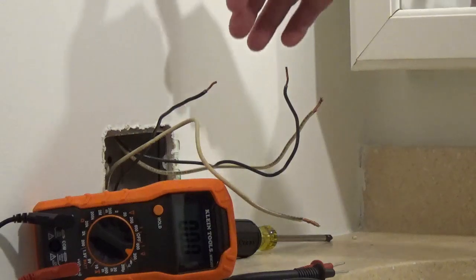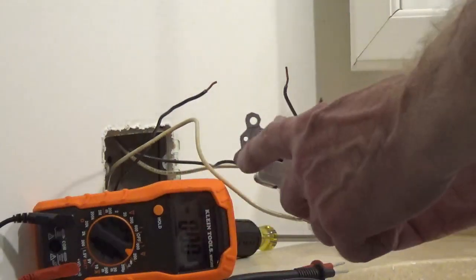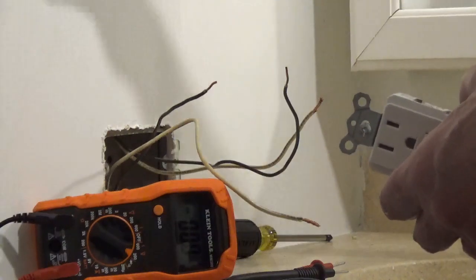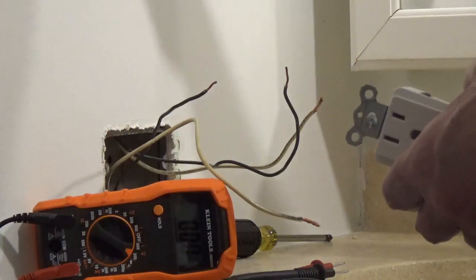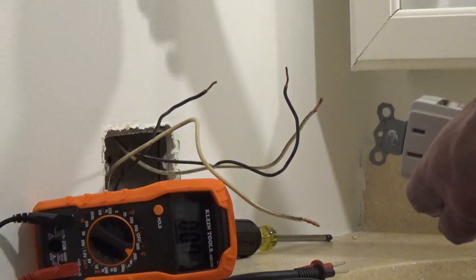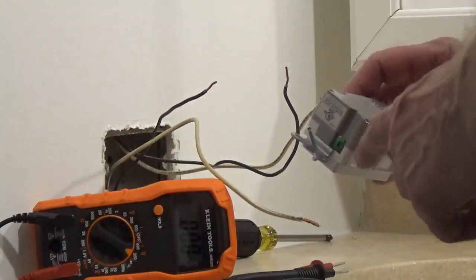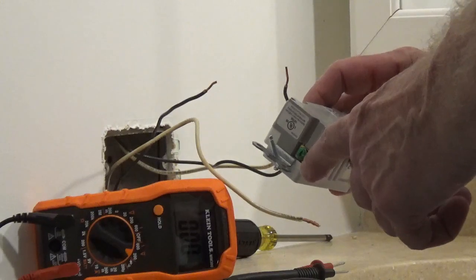When I put the metal screw and the metal strap on the GFCI into this metal box, it's grounded all the way back to the service panel. If you're in an area with non-metallic cable, you're going to have a bare ground wire that you'll be connecting to the green ground screw.